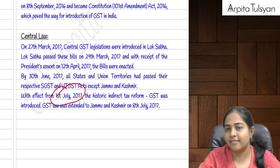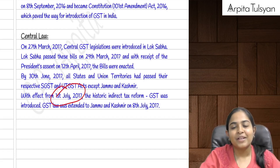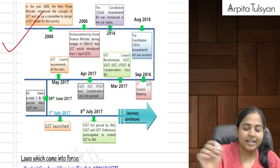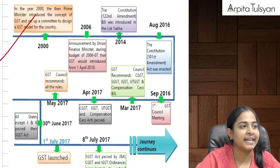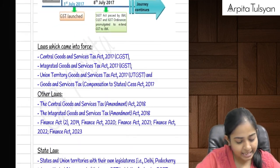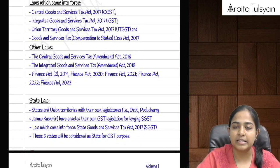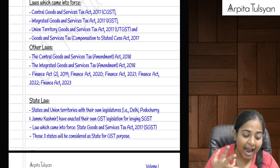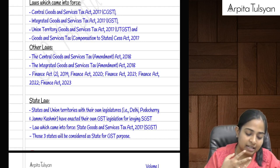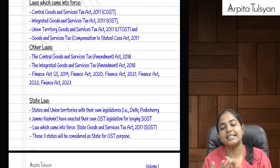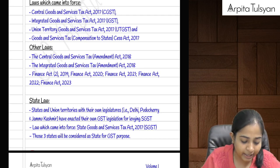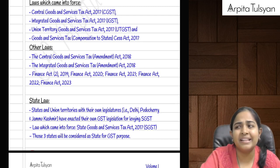This was an indirect taxes reform. Except for Jammu and Kashmir, from 1st July 2017, and by 8th July 2017 the law was extended to Jammu and Kashmir as well. The laws that came into force were: CGST Act, SGST Act, UTGST Act, and very importantly the GST Compensation Cess Act.